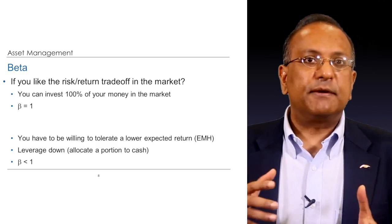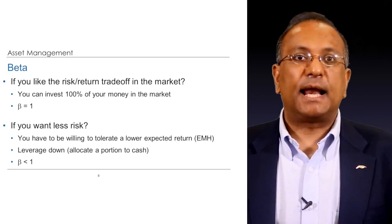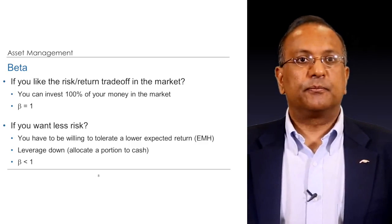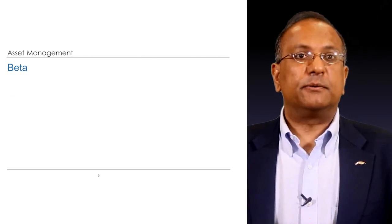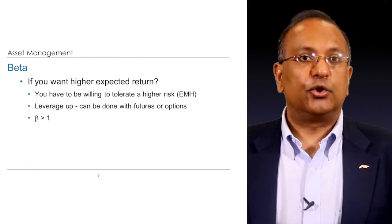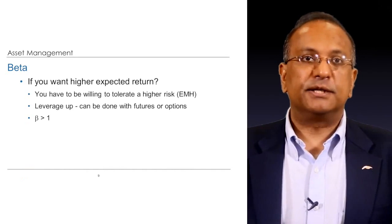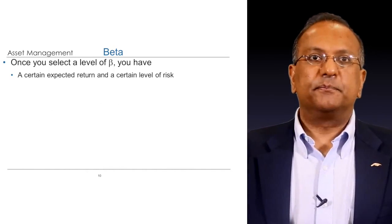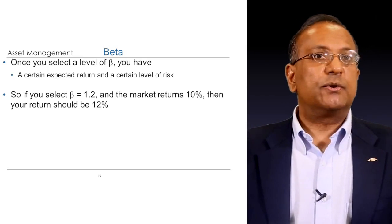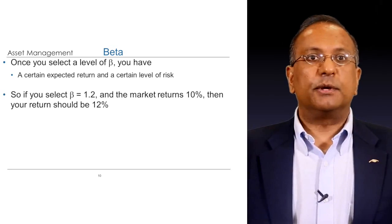You can invest less than 100% — leverage down, as they say — allocating a portion of your portfolio to cash. In this case your beta is less than one. But if you want a higher expected return, you ought to be willing to tolerate higher risk; you may leverage up, which can easily be done particularly with derivatives, and then your beta is greater than one. Once you select a level of beta, you have a certain expected return and a certain level of risk. So if you select a beta of 1.2 and the market returns 10%, then your return ought to be 12%.